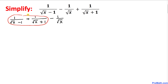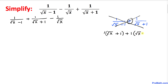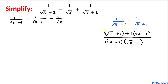Let's focus on these first two fractions and add them using the crisscross method. We cross-multiply: one times square root of x plus one, plus one times square root of x minus one, all divided by the product of the two denominators: square root of x minus one, times square root of x plus one.